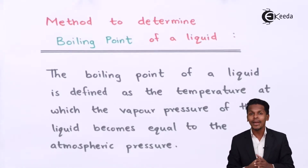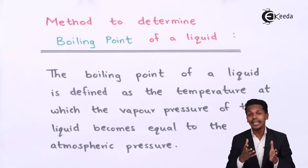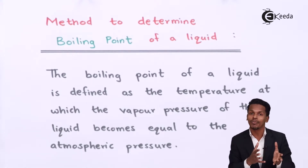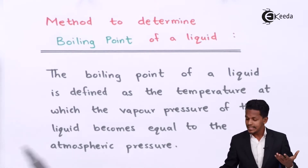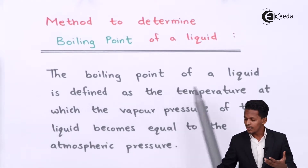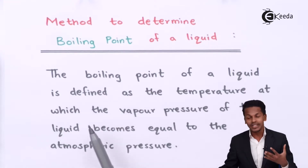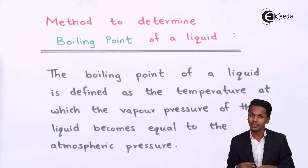In this topic we are going to determine the boiling point of a liquid. It is very much essential for us to understand what the boiling point of a liquid actually is. The boiling point of a liquid is defined as the temperature at which the vapor pressure of the liquid becomes equal to 1 atmospheric pressure.